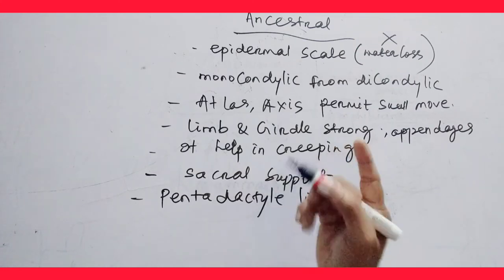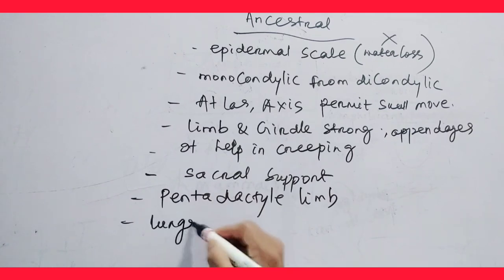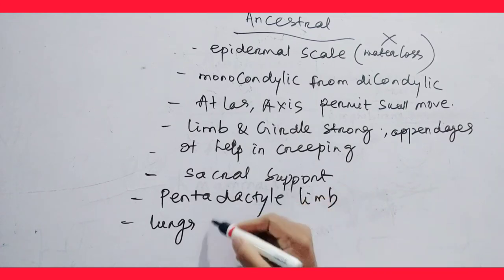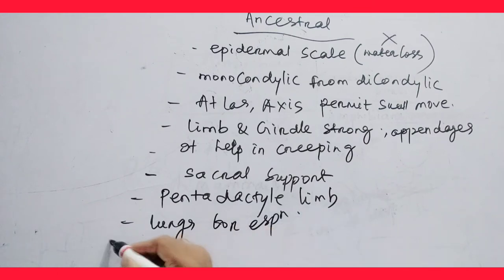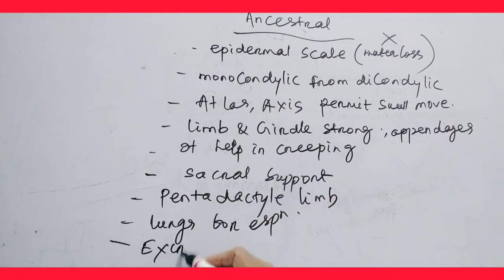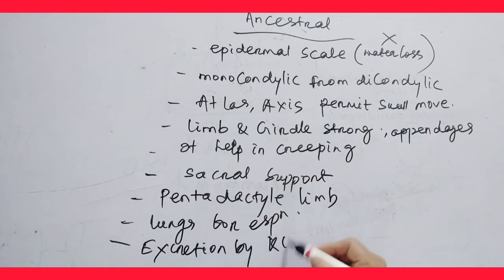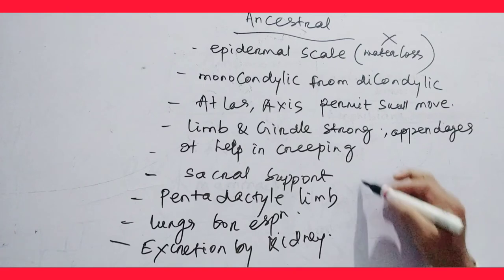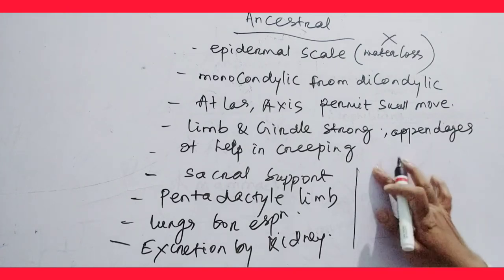The lungs became efficient for respiration. Excretion takes place by the kidney. The circulatory system consists of an incomplete four-chambered heart — actually three chambers instead of four, because the ventricle is not completely developed, incompletely developed.